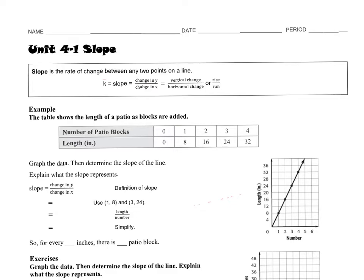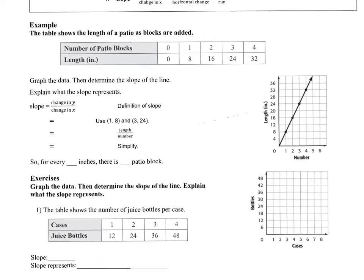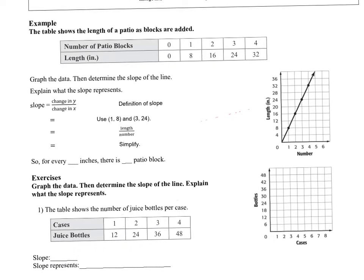Example one says the table shows the lengths of the patio blocks that are added. We did a table in the last unit. We found the change in the table. So we found the change here, the change here. We found the change in the y because this is the x part and this is the y. So finding the change in the y over finding the change in x.